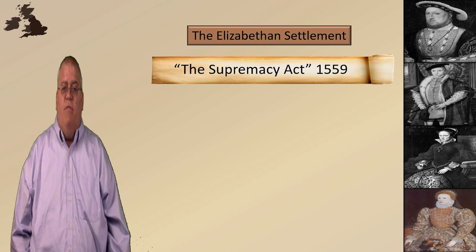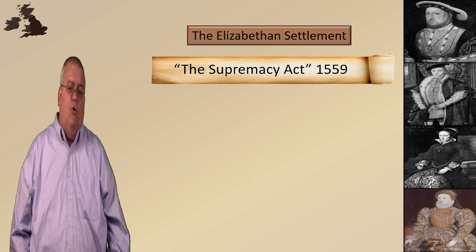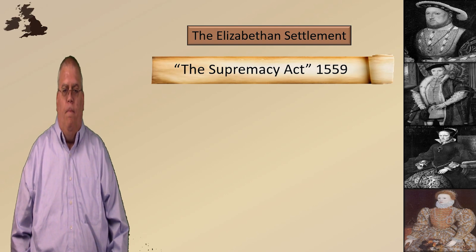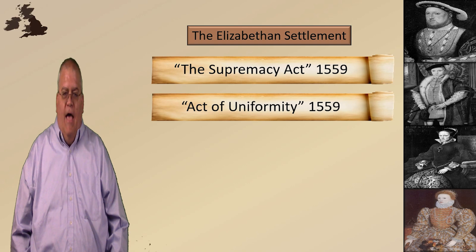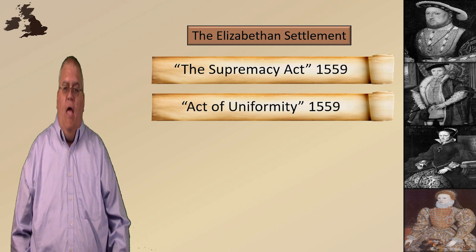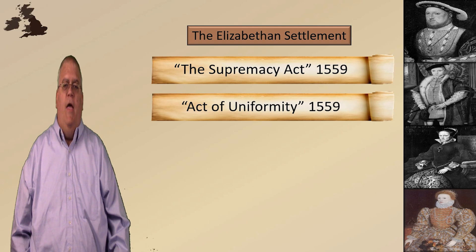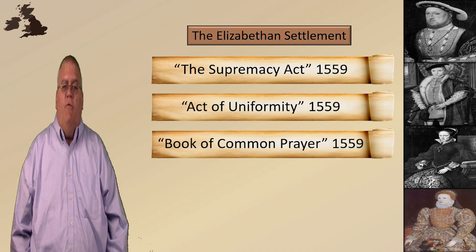The Elizabethan Settlement is illustrated by four documents. First is the Act of Supremacy. This formalized in law that the Supreme Head of the Church is Elizabeth the Queen. Every civil leader and every church leader — every minister — had to take an oath: 'I do utterly testify and declare on my conscience that the Queen's Highness is the only supreme governor of this realm, as well in all spiritual or ecclesiastical things or causes.' In other words, what Elizabeth says goes in all things civil and religious. This basically made Elizabeth the English pope.